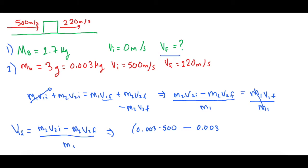And then we're going to minus the mass of the bullet, 0.003 times its final velocity, so 220 meters per second. And that number, all over 2.7. So it's basically the change in the momentum for the bullet divided by the mass of the block.